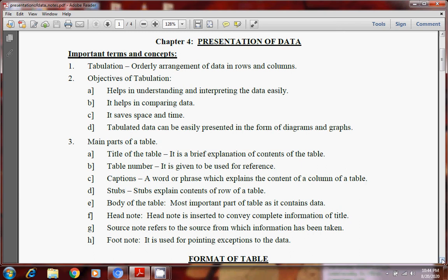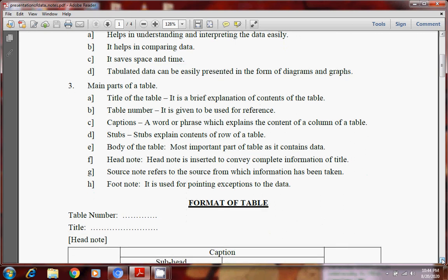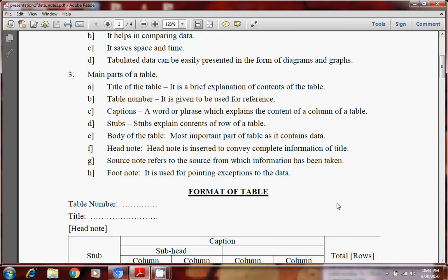Next is table. Textual data is presented in the form of table. So main parts of table. This table is quite important. All the components of this table and the format of table is quite important. So first main part of table is title of the table. What it shows? It shows a brief explanation of contents of the table. Means table ke andar kya contents hai? It comes in the title of the table. Suppose we are scoring marks of students. Then title should be students marks or student result. Then second is table number. So every table is given a table number. What is that table number? It is given for reference. Like which table number is this?